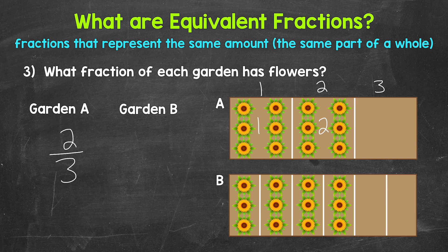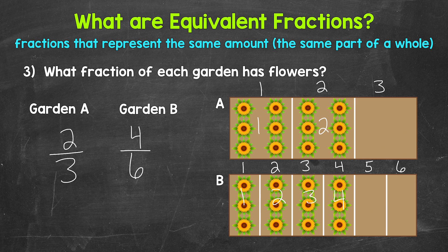Now let's take a look at garden B. Garden B is divided into six equal sections, so six is our denominator. Four of those sections are filled with flowers, so four is our numerator. Four sixths of garden B is filled with flowers. Two thirds and four sixths are equivalent fractions — both represent the same amount. We can see that shown with the gardens: we have different fractions, but they represent the same amount, the same part of the whole garden. So another example of equivalent fractions.